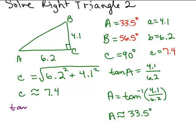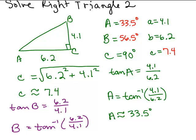I know that the tangent of B would be its opposite, which is 6.2 over 4.1. So if I wanted to know what B is, I would do the tan inverse of 6.2 over 4.1. So go ahead and put that in your calculator, the tan inverse of 6.2 over 4.1.